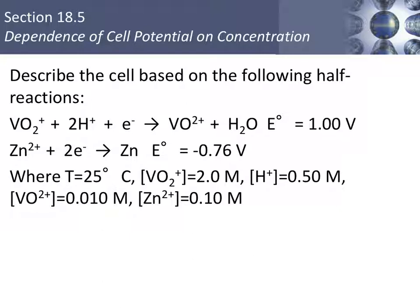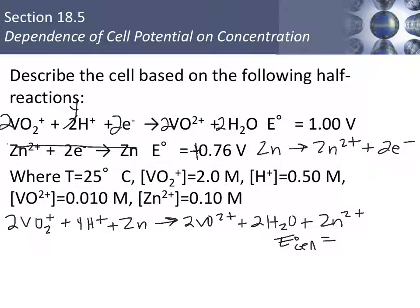Let's start with writing out the balanced cell reaction. We're going to flip around the second half reaction and turn it into an oxidation. And then we'll also flip the sign on the voltage, so it'll be positive. We need to balance out the electrons. We'd like two electrons lost and gained. That changes our coefficients in the first half reaction, but not the voltage. That gives us this overall balanced cell reaction, and the standard cell potential is 1.76 volts.